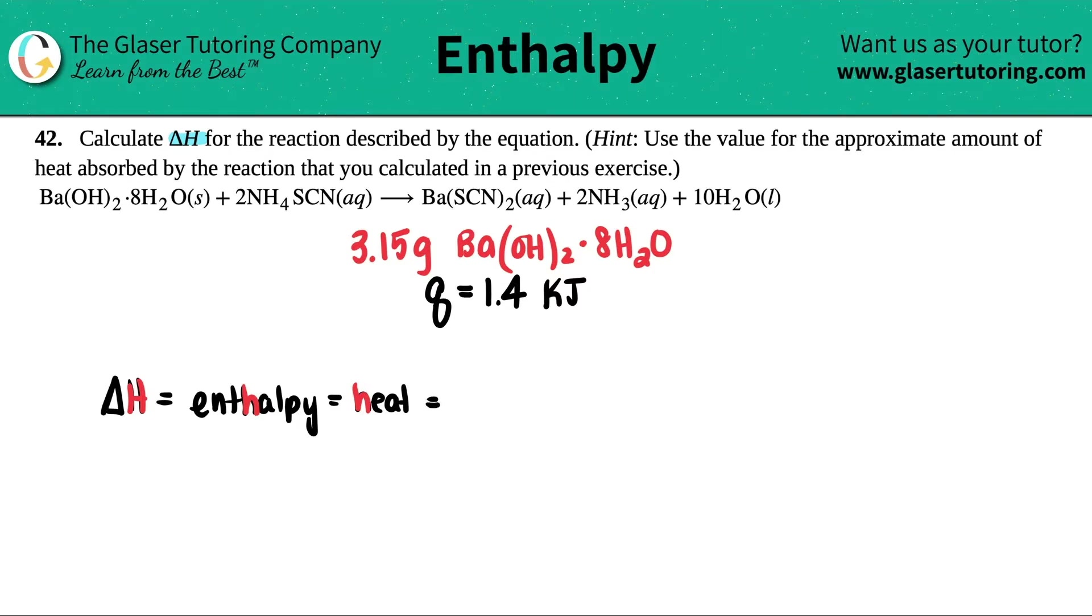Delta H has a very specific unit. Delta H's standard unit is always kilojoules divided by moles. So that's basically what we have to find out here. They want us to calculate the delta H. So we need a kilojoule value and we need a mole value. And then we just divide the two. Now it's beautiful because in the previous example, we found out that there was 1.4 kilojoules of heat that was going to be absorbed. I know that was absorbed because it's a positive number.